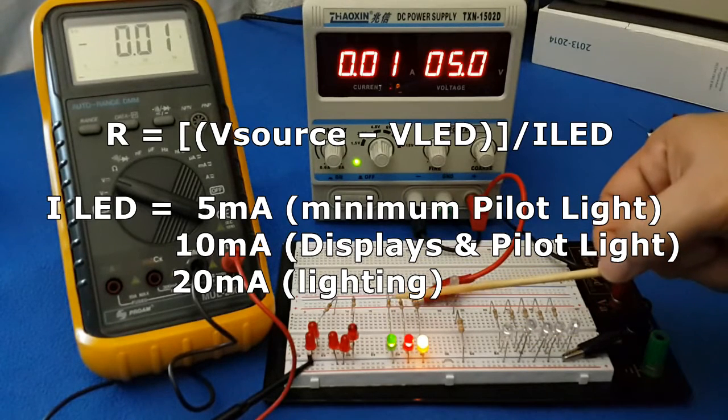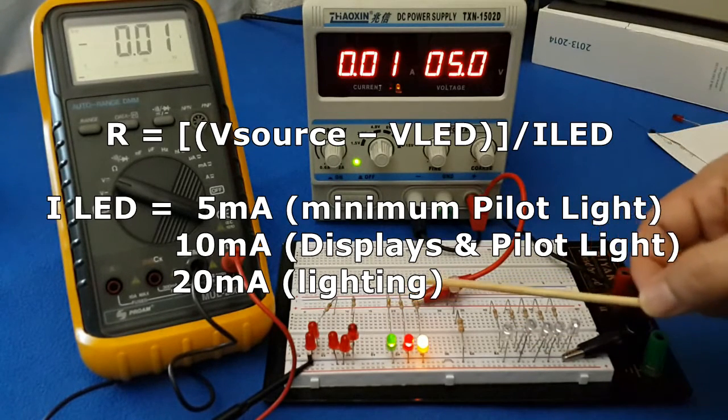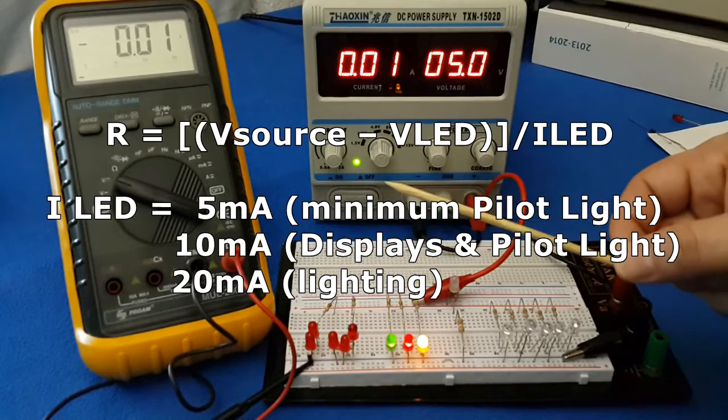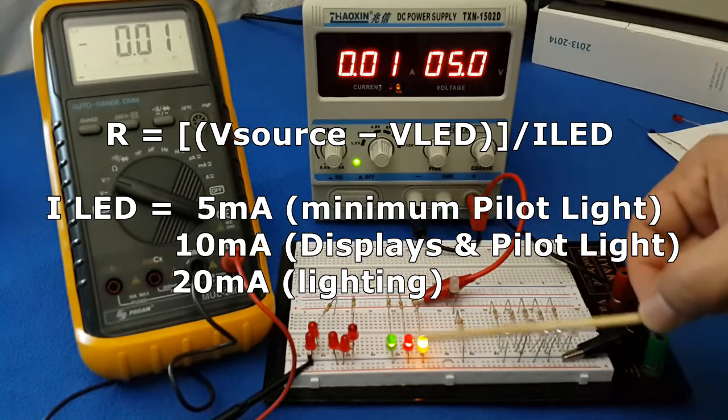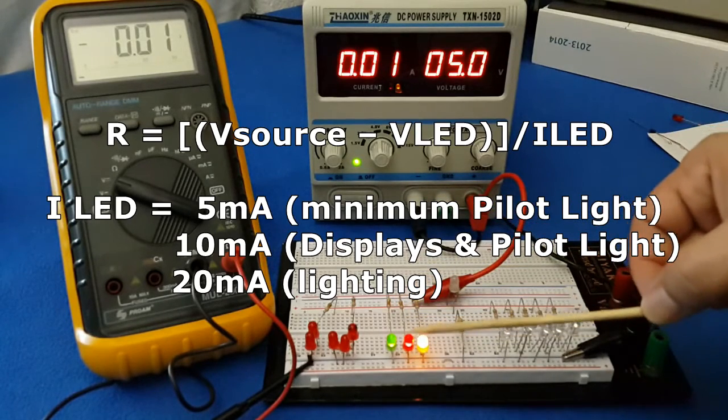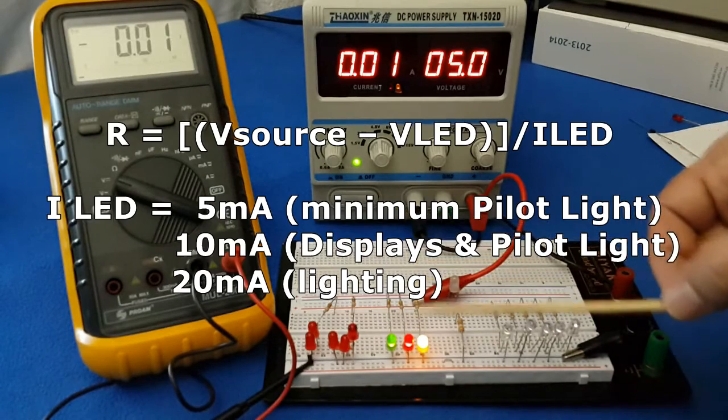The value of the resistor is equal to the voltage in the source minus the voltage drop across the LED, divided by the current.